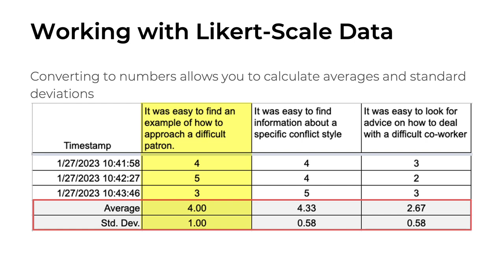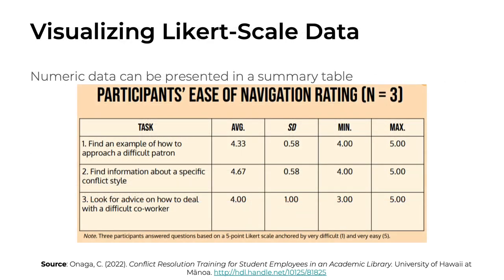If you're not familiar with standard deviation, don't worry. It is simply a measure of the amount of variation around the mean or average. A low standard deviation means all of the responses were close to the average, whereas a high standard deviation means all of the responses were spread out over a wider range. Once you've calculated your numeric data, you can present it in a summary table. This is a table from Shelby from the 2022 cohort, presenting results related to how easy it was to navigate her instructional module. Her data is presented in what is often called a four-number summary: average, standard deviation, minimum value, and maximum value recorded. Because this is Likert-scale data, the lowest possible value is 1 (strongly disagree) and the maximum possible value is 5 (strongly agree).